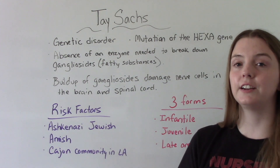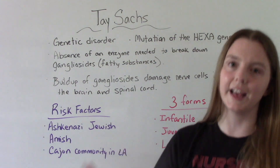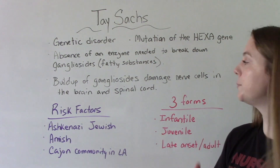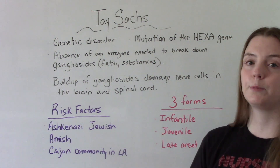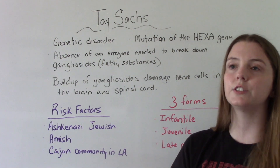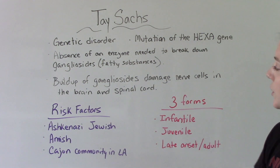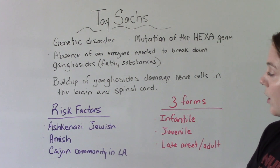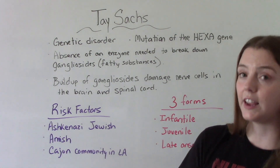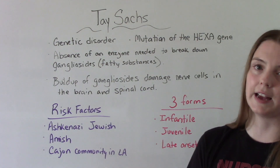Because it is a genetic disorder, our big risk factors are going to be genetics — who your parents are. Certain populations are at higher risk to be carriers and to pass this down. Those groups include Ashkenazi Jewish people, the Amish, especially the Amish in Pennsylvania, and the Cajun community in Louisiana.